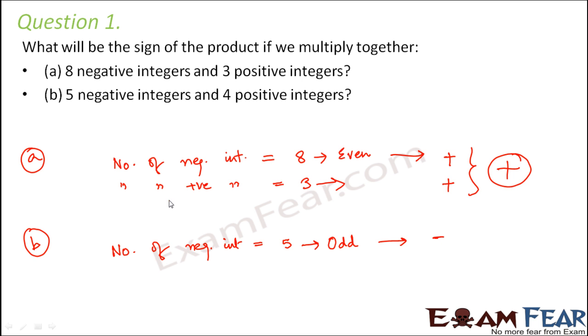Now what about 4 positive integers? So the number of positive integers is 4. And anyways, it doesn't matter whether the number of positive integers is 3 or 4, the product is always positive. So now, the product, half part of the product would be negative and the remaining part of the product would be positive. So overall the product would be negative.